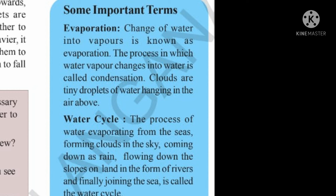Next, the water cycle. The process of water evaporating from the seas, forming clouds in the sky, coming down as rain, flowing down the slopes on land in the form of rivers, and finally joining the sea is called the water cycle. The water flows onto the slopes on the land in the form of rivers and they finally join the sea — this is called the water cycle.